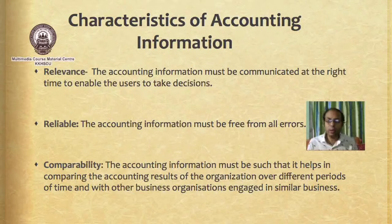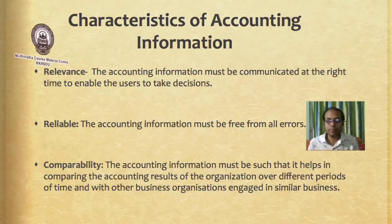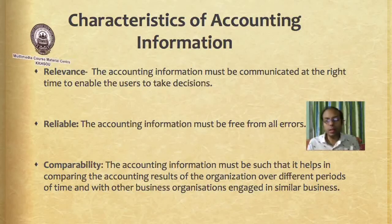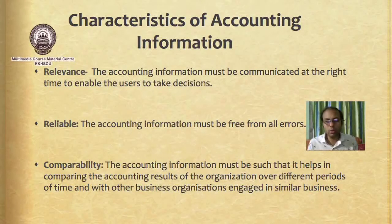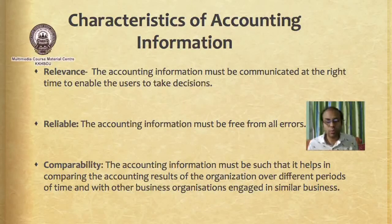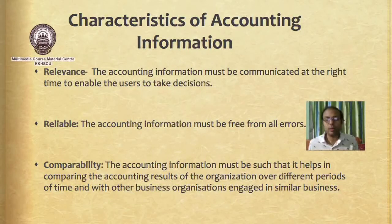Comparability: the accounting information must be such that it helps in comparing accounting results. A business continues over a very long period, but we calculate results over different periods — maybe three months, six months, or one year; for tax purposes it is generally one full financial year. The business results must be comparable across periods, and at the same time comparable with companies involved in the same kind of business, that is with competitors. This is possible when accounting information is supplied consistently to allow comparison across periods and across companies.